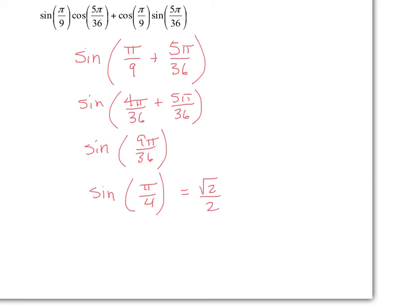So this expression over here, simplified using a sum identity, gives us exactly √2/2.